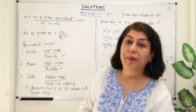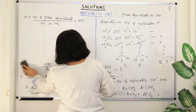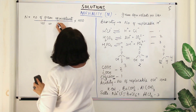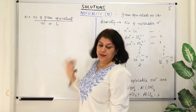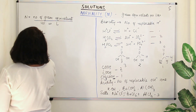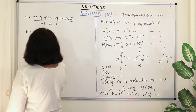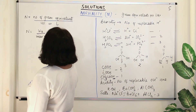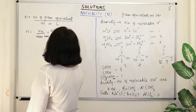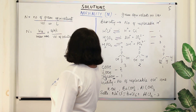Now let us simplify the normality formula. Writing volume in liters, we can remove the factor of 1000. So normality equals the weight of the solute divided by the molar mass of the solute divided by its basicity or acidity (or charge on the cation), all divided by the volume of the solution in liters.